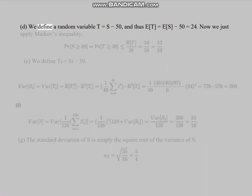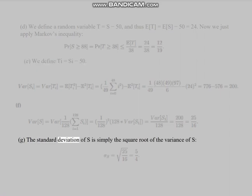Part (d): We define a random variable T = S - 50. And thus E(T) = E(S) - 50 is equal to 24. Now we apply Markov's inequality to get the improved bound. Part (e): We define T = S_i - 50. Part (g): The standard deviation of S is simply the square root of the variance of S.